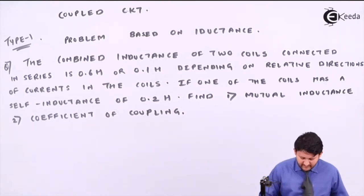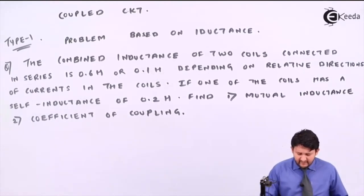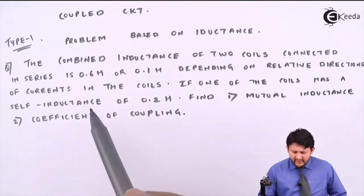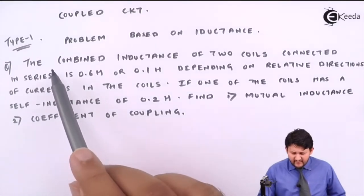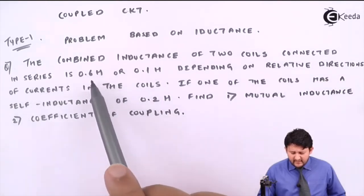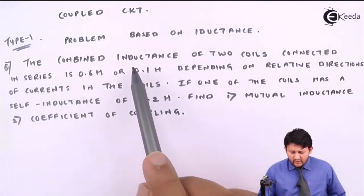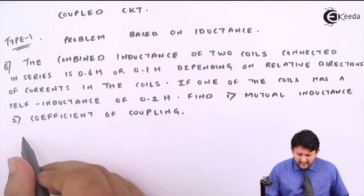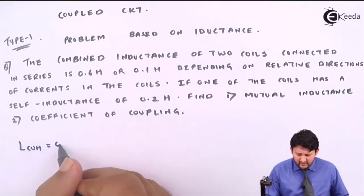If you observe sum number one very carefully, when you read it, it's defined as the combined inductance of two coils connected in series is 0.6H or 0.1H. When I say 0.6, that is my cumulative, and my difference is 0.1.